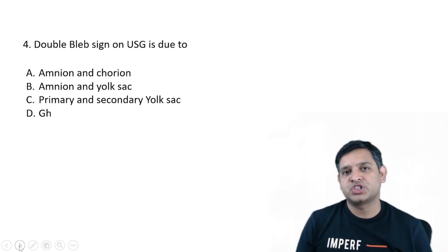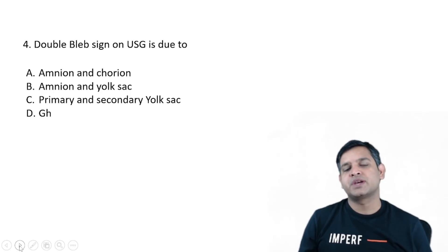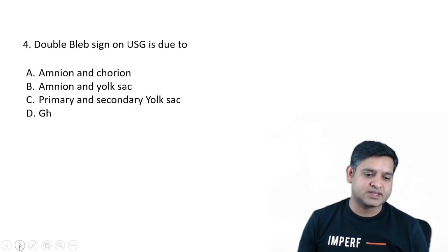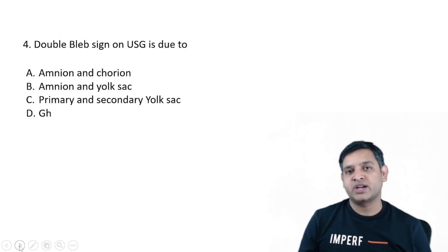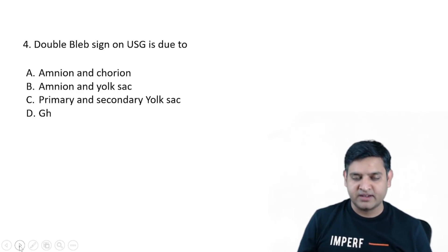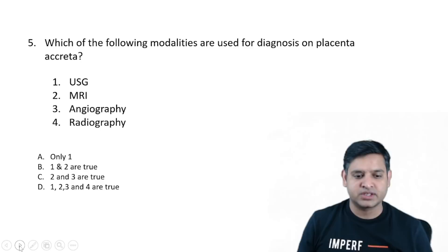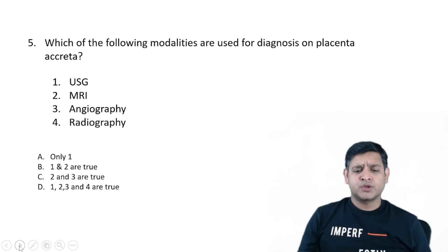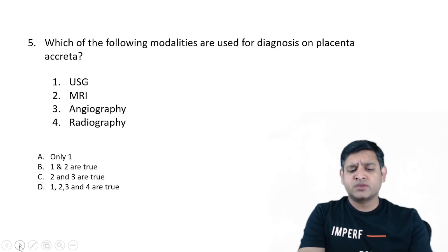Double black sign on USG is a repeat question from AIIMS. It is due to the amnion and yolk sac. I don't think there is anything more to discuss in this question.